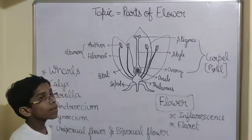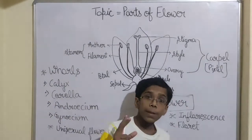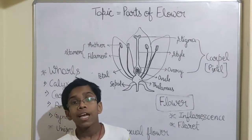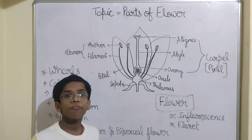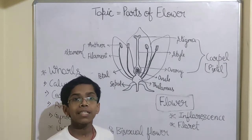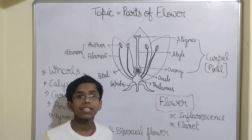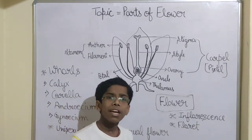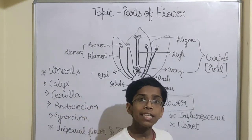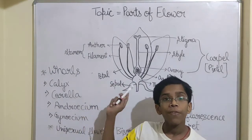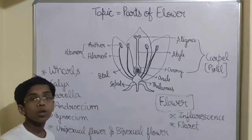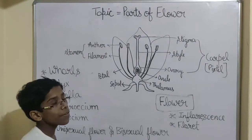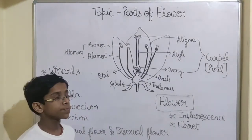So guys, what is the flower? Flower is the reproductive part of a plant. And we have eaten fruits and they have seeds. How do we get fruits and seeds? We get fruits and seeds with the help of flower only. So we are going to discuss about the structure of a typical flower.